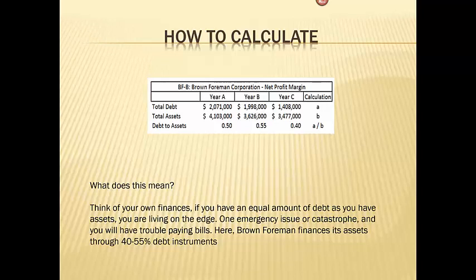Here are the numbers for Brown Foreman. For example, in the first year, Year A, they had total debt of $2,071,000 and total assets of $4,103,000. Remember, these are in thousands, so those are actually billions of dollars — two billion dollars and four billion dollars.